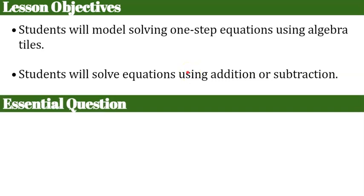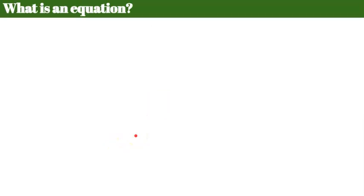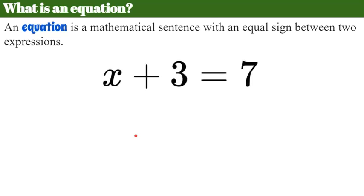The question I'd like you thinking about today as I proceed through the lesson is: what are inverse operations? First let's talk about an equation. What is an equation? An equation is a mathematical sentence with an equal sign between two expressions. Math is an actual language, just like English or Spanish, and we need to learn how to interpret and read it. So this is a math sentence, which is also known as an equation.